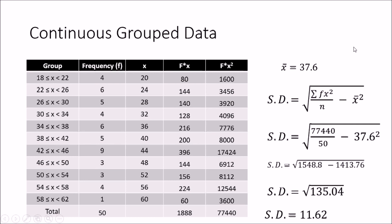So we have now calculated the standard deviation for three different data sets: a discrete data set, a discrete grouped data set, and a continuous grouped data set. This ends the first part of the tutorial series covering descriptive statistics — central tendencies and spread measurements. In the next tutorial, I will look at correlation and regression analysis, another important part of statistical analysis.